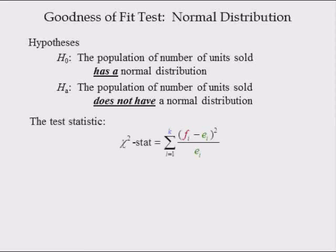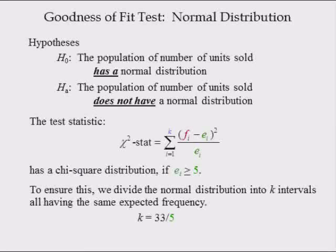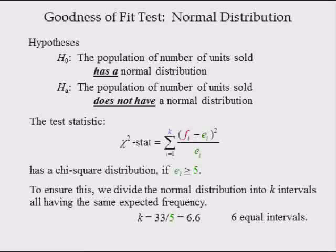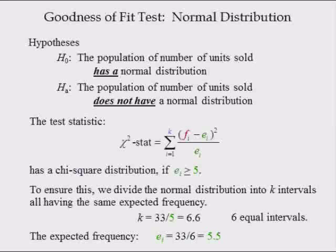The chi-square statistic has a chi-square distribution if the expected frequencies are all 5 or more. To ensure this, we divide the normal distribution into k intervals, all having the same expected frequency. If the expected frequency of each interval is 5, we divide the sample size 33 by 5, which equals 6.6. Since you cannot have 6.6 intervals, we round this down to the nearest even number, which is 6. Hence, we will split the normal distribution into 6 intervals, all having the same expected frequency. The expected frequency of each of the 6 intervals equals 33 divided by 6, which is 5.5 — greater than 5.